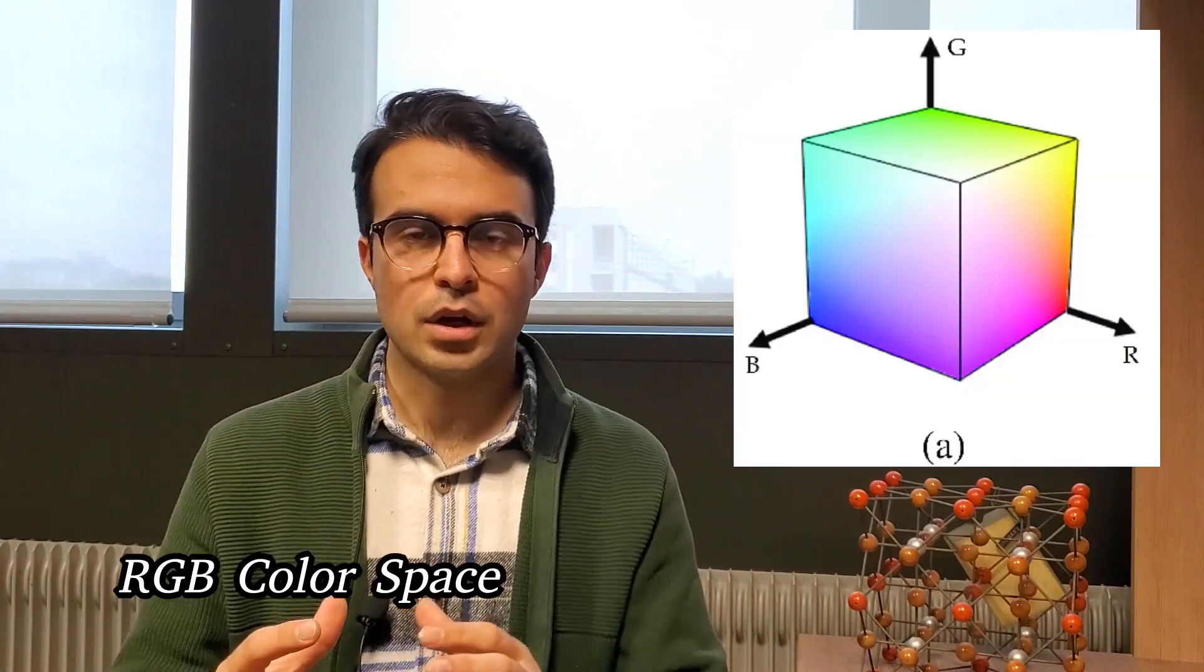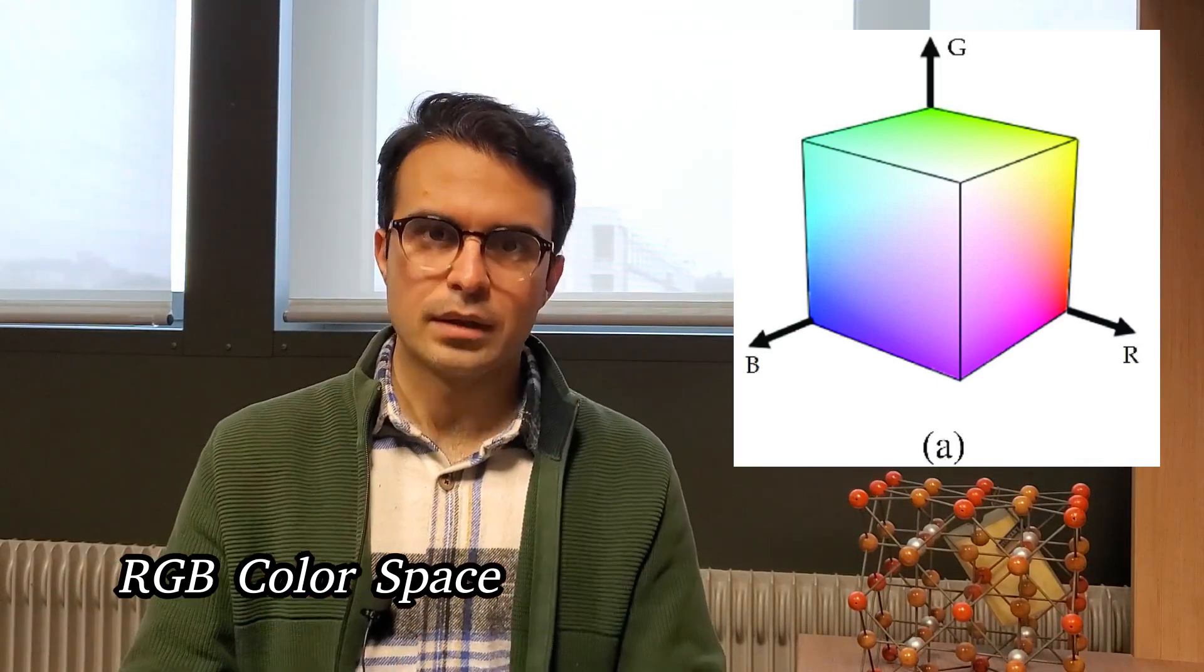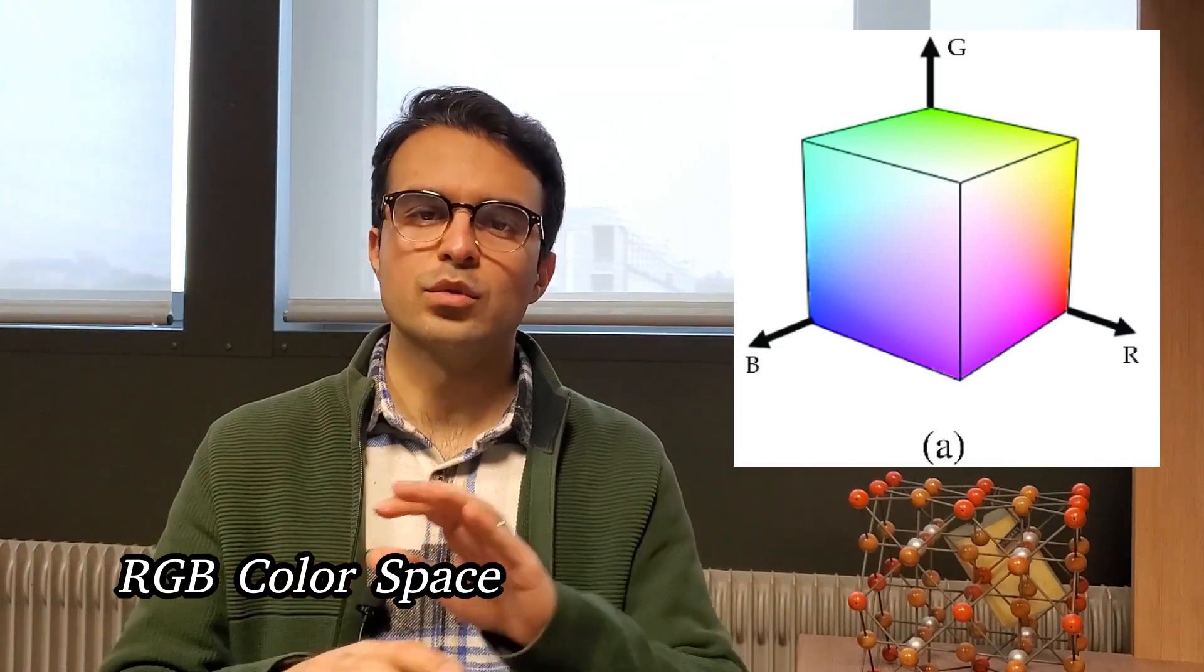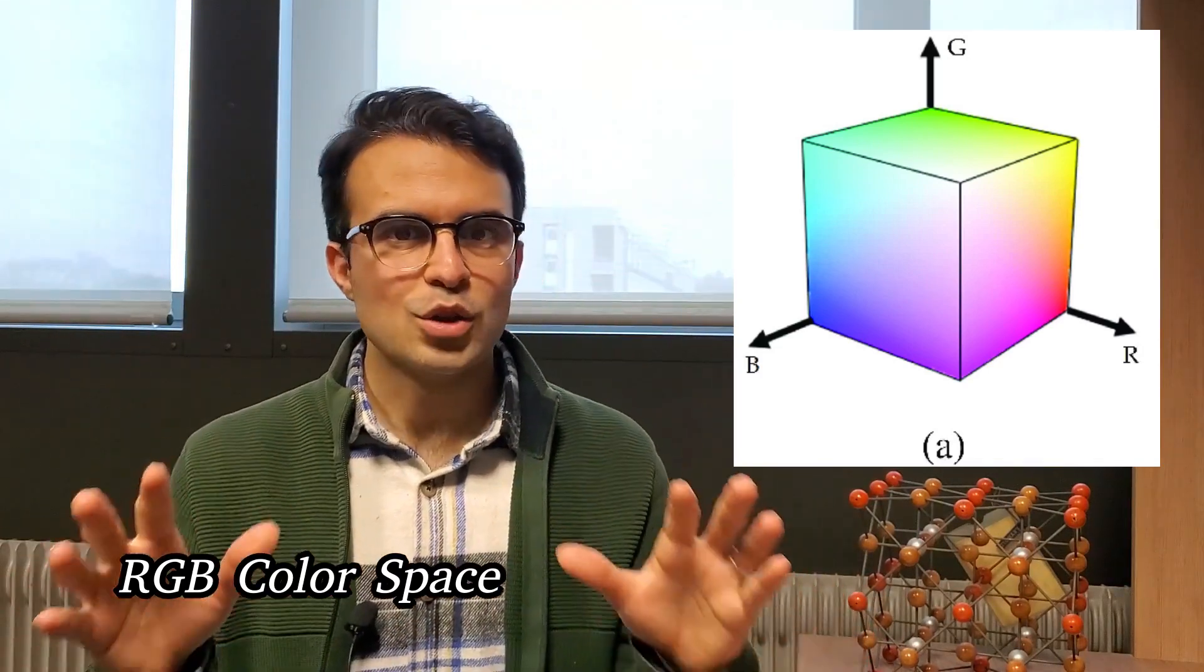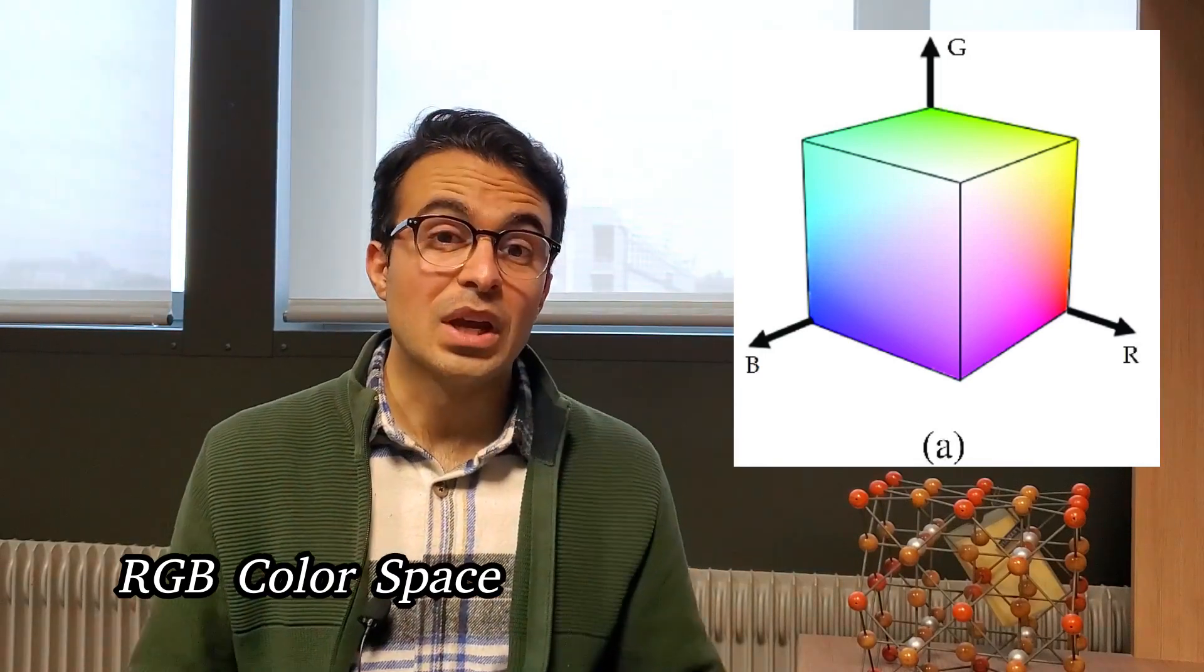You need color spaces. For example, RGB color space. You have a cubic space that has three axes. If you consider each axis from zero to 255, so if we are in zero-zero-zero, the three colors are zero and we don't have any colors. So you may predict that we will have black.